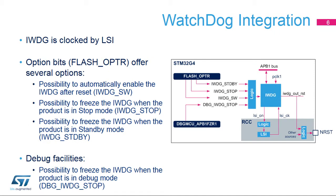The STM32H7 microcontroller includes two Independent Watchdogs, or IWDGs. IWDG-1 is dedicated to CPU1 usage, and IWDG-2 is dedicated to CPU2 usage. For each Independent Watchdog, it is possible to select the hardware or software start via Option Bytes. For each Independent Watchdog, it is possible to select if the watchdog will freeze when the associated CPU is in debug or core-halted mode.